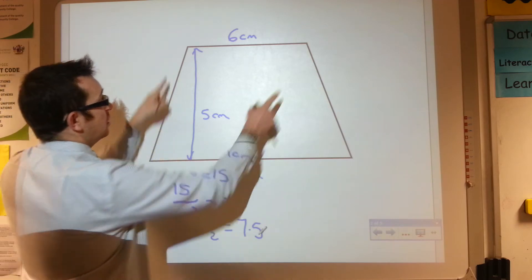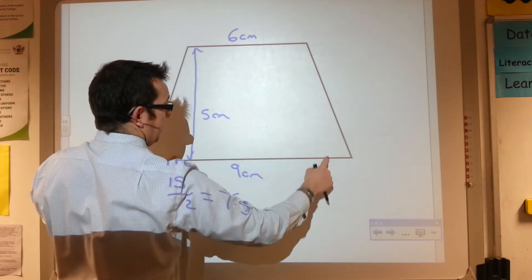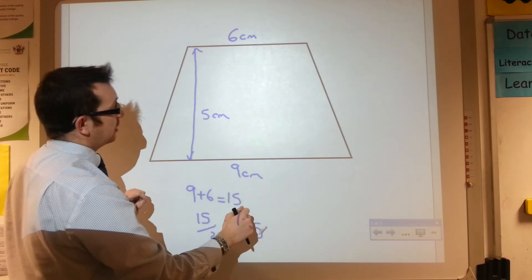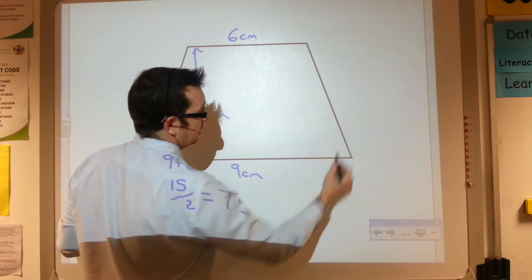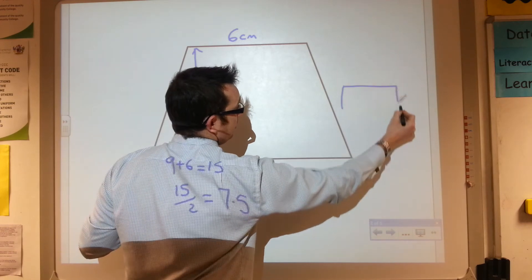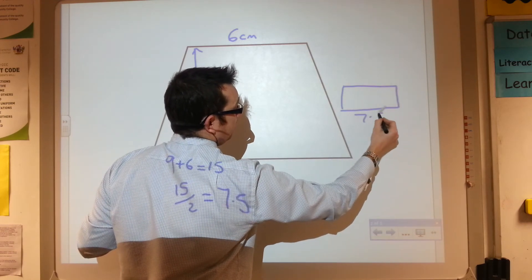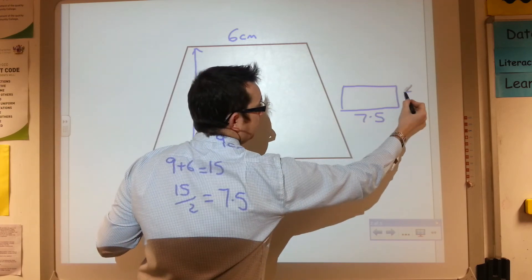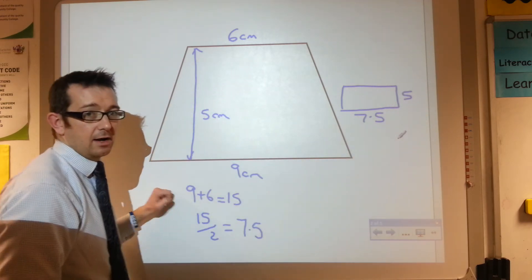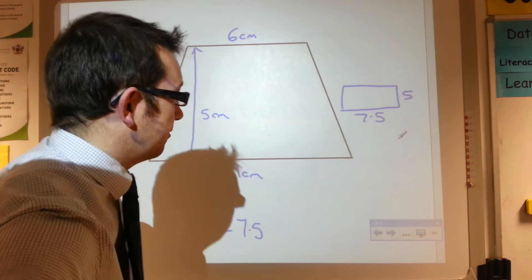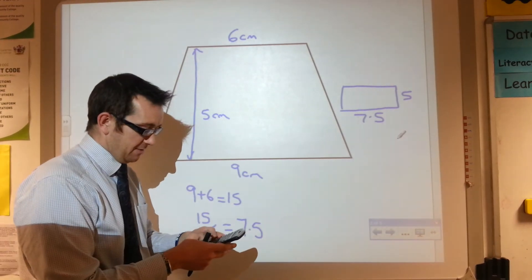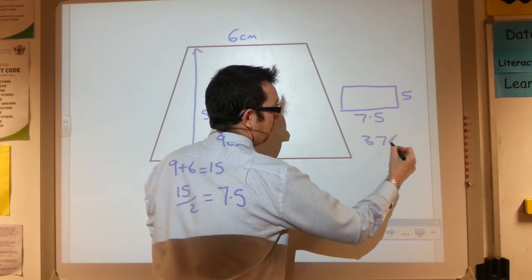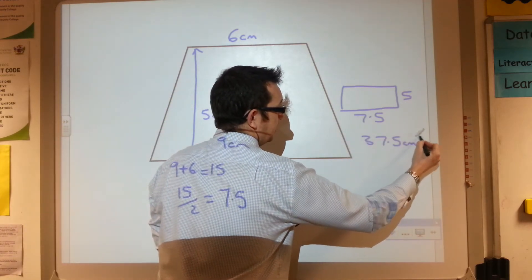So I now know that if I was going for a rectangle here, it would be 7.5 in length. So my rectangle would now look like this. It would be 7.5 and the height would still be 5. So I now need to do 7.5 times 5. On the calculator, 7.5 times 5 is 37.5 centimeters squared.